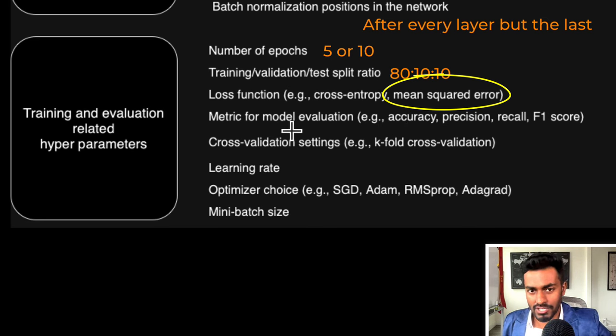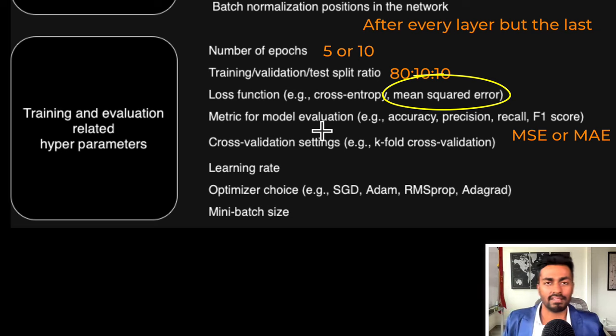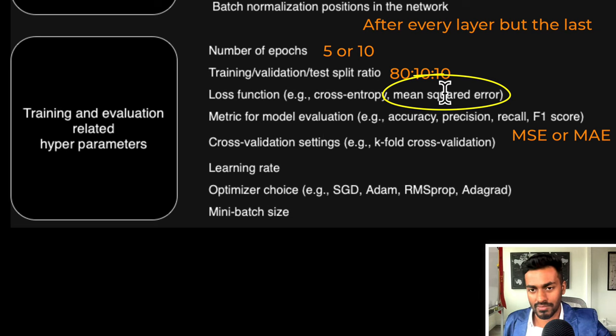The metric for model evaluation could simply be a mean squared error, the difference between the price of a house and the difference between its actual price, or it could be a mean absolute error to make it more human interpretable. These other evaluation metrics could be used in case of classification problems.